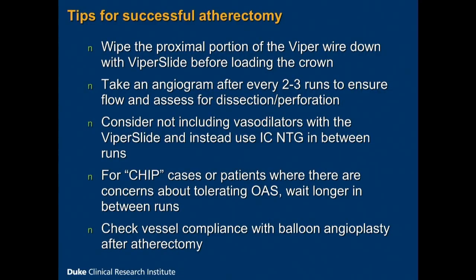Here are some tips. The viper wire tends to be a little bit flimsy, just like the rotowire, so wipe the proximal portion down with viper slide before you load the crown — that will allow you to advance the crown through the catheter very easily. We tend to take angios between every two runs, fluorosaved to minimize radiation, just to make sure you don't have a significant dissection or perforation, and to confirm there's flow. My personal approach is to not use any vasodilators with the viper slide infusion, primarily because I want to make sure that if the patient's blood pressure drops, it's due to a clinical event and not the vasodilator. Instead, we use intracoronary nitro in between the runs.